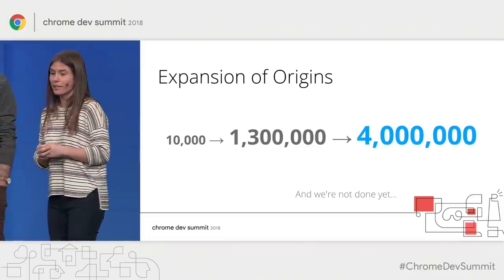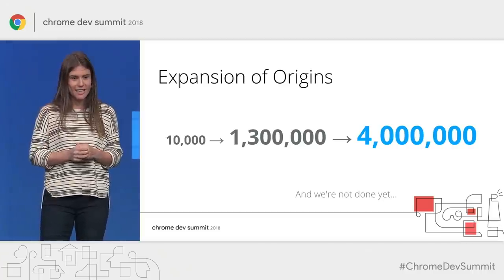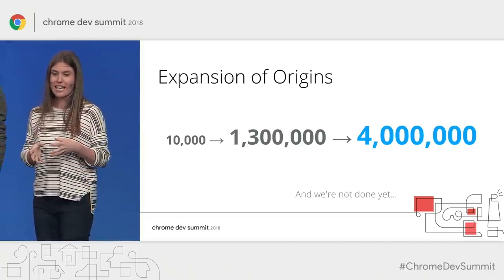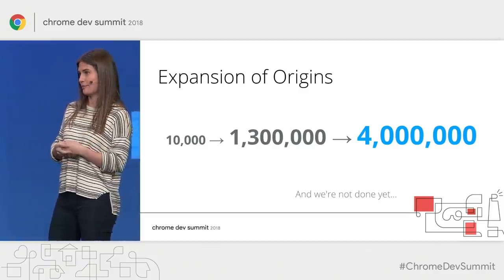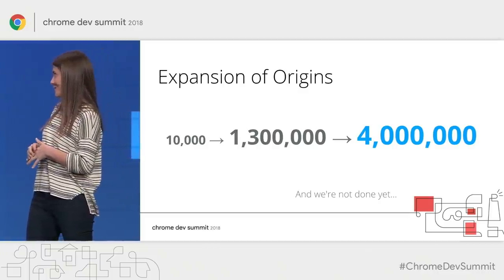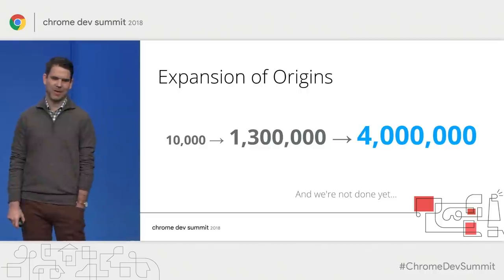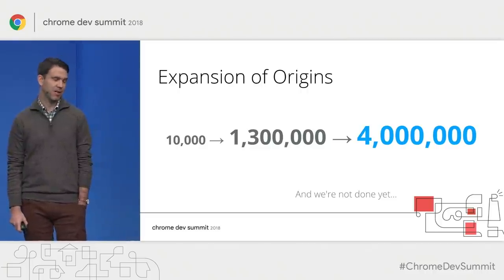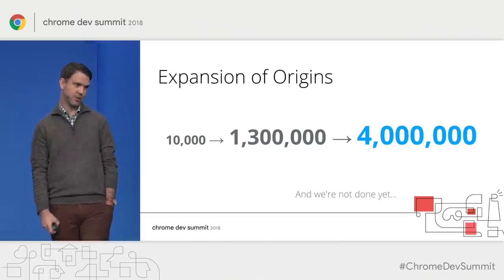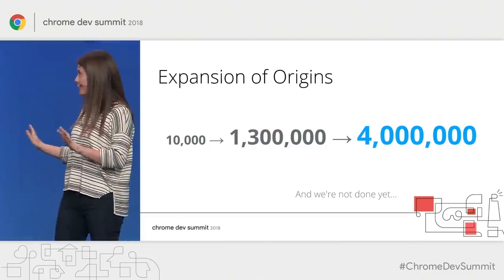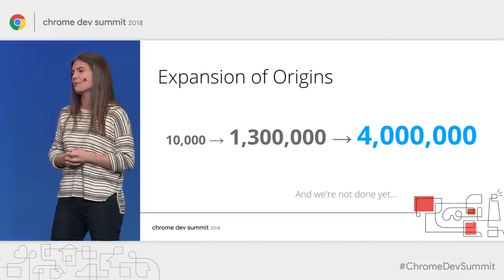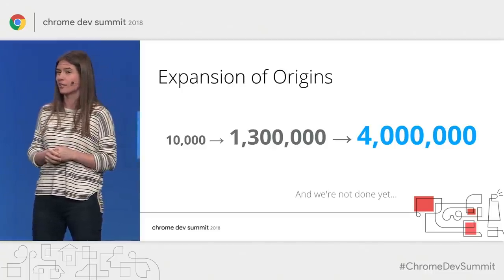When we announced last year, the dataset only had 10,000 origins, and now we are at over 4 million. We're working hard to improve it and expand quickly, so if you're excited to see your website in the data set, check in soon because we are working hard to move fast.